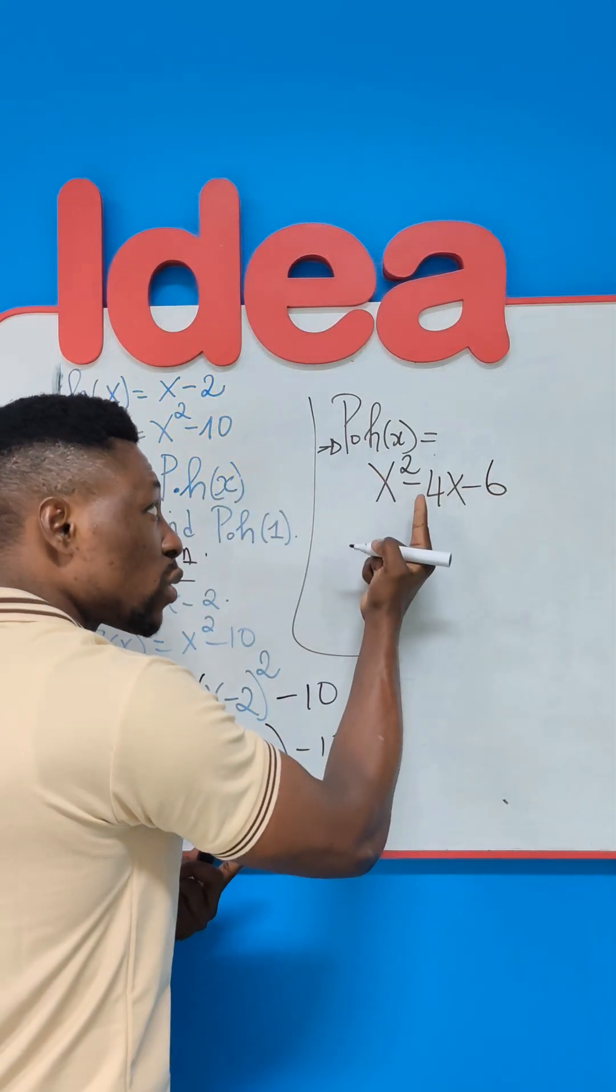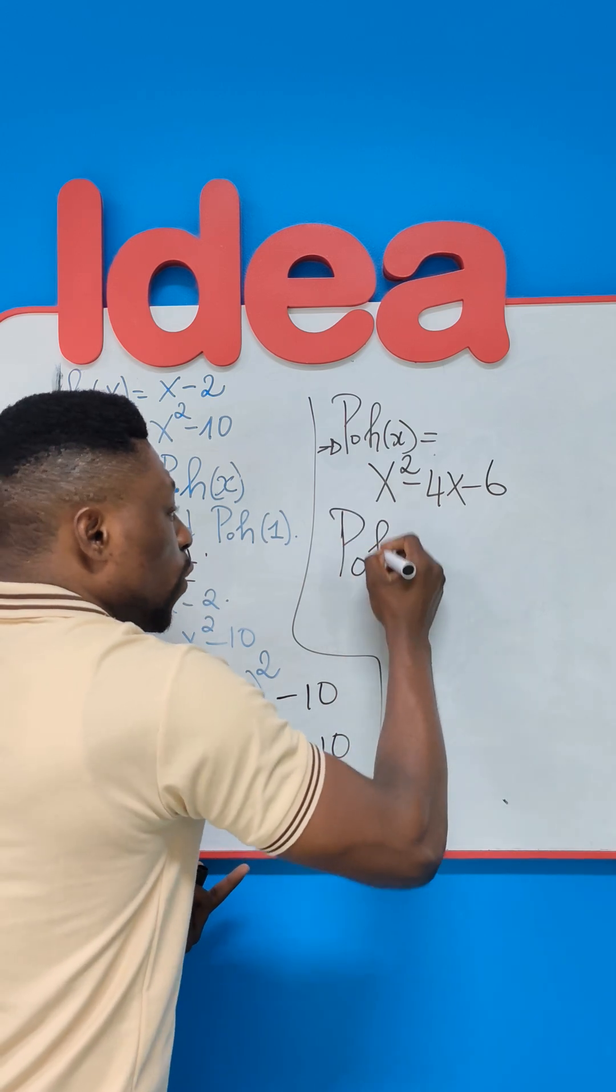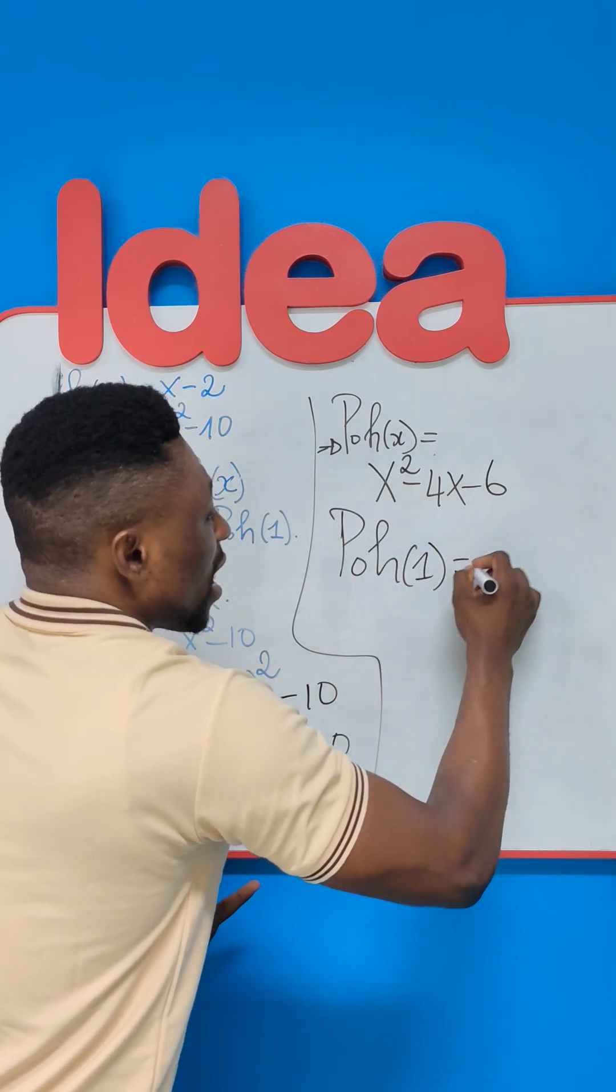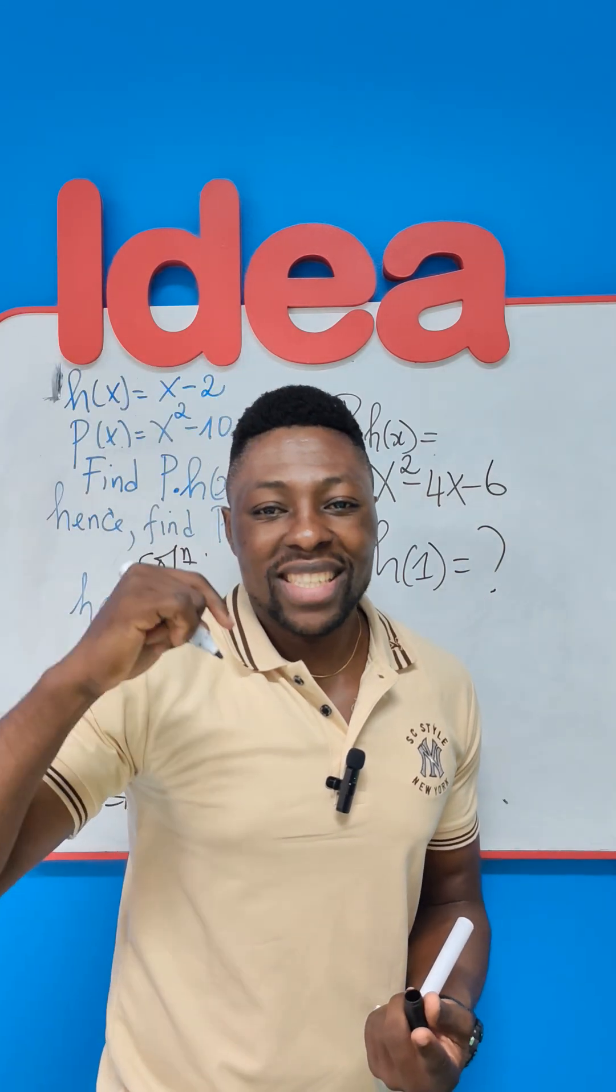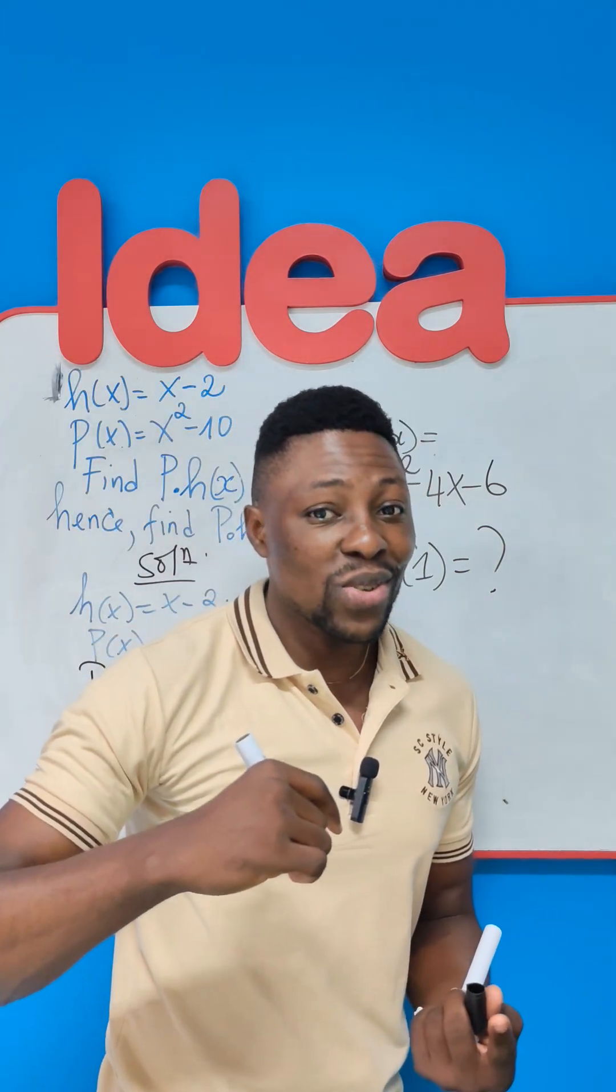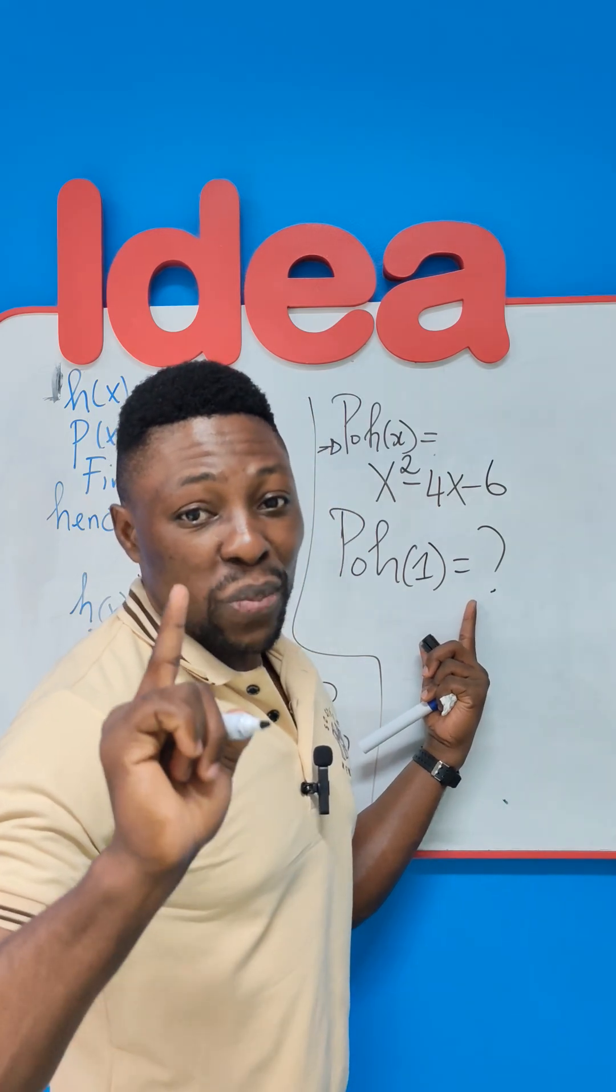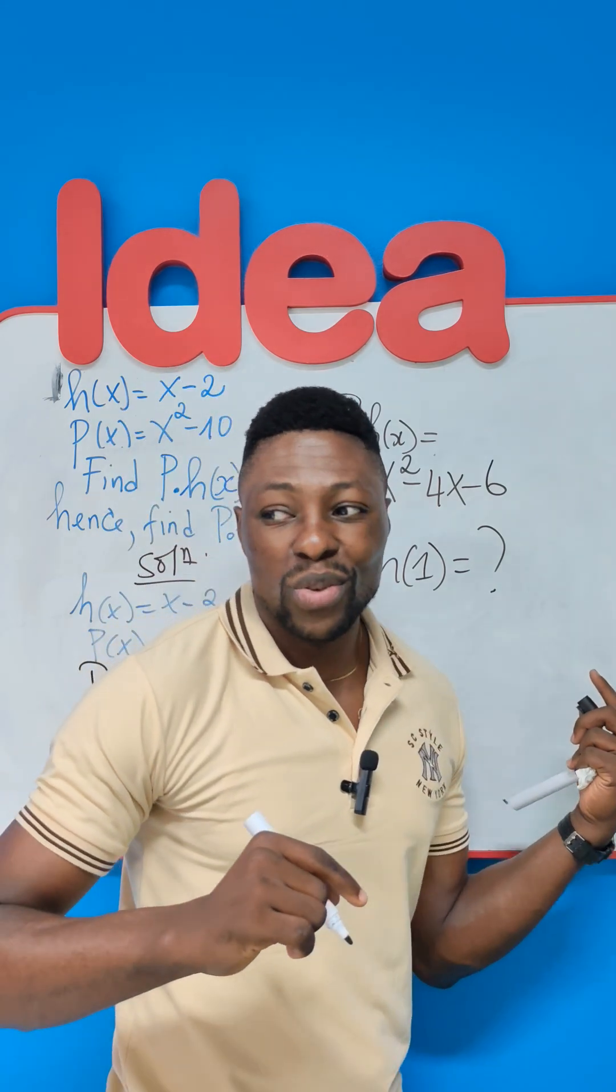So if you have understood what we've done so far, then compute for P of H of 1 and put your answer in the comment section. If you haven't still understood, you can always subscribe to the channel and leave a comment down there and we will do a special session for you because tomorrow will be better.